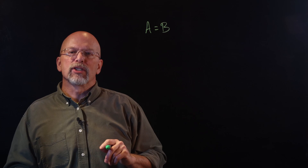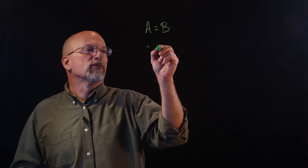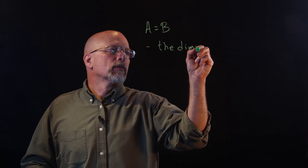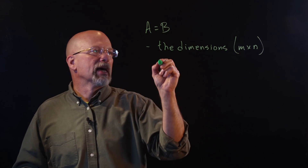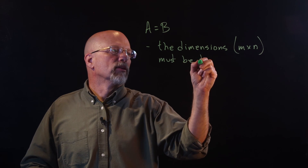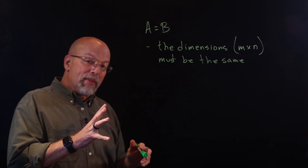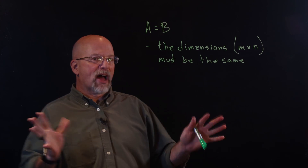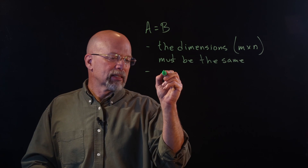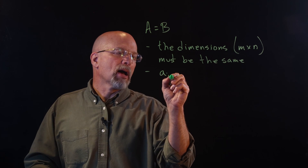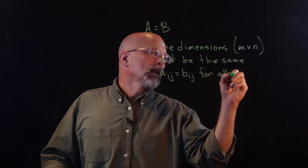What does it mean for two matrices to be equal? If matrix A equals matrix B, first of all the dimensions M by N must be the same. A 5 by 3 matrix can equal a 5 by 3 matrix, but a 5 by 3 matrix cannot equal a 3 by 5. The second thing is that every element A sub i,j must equal B sub i,j for all elements.